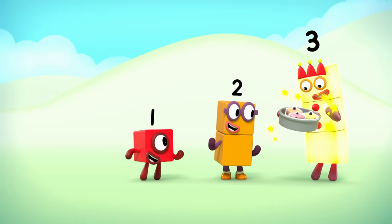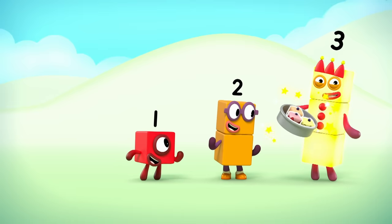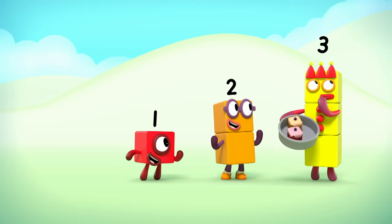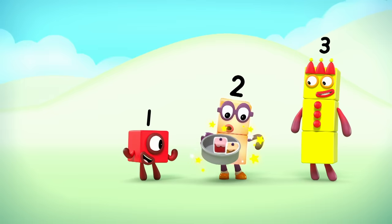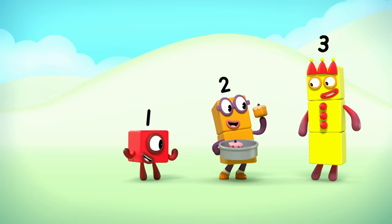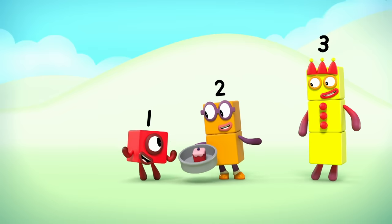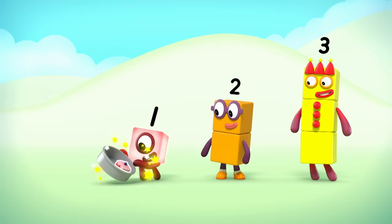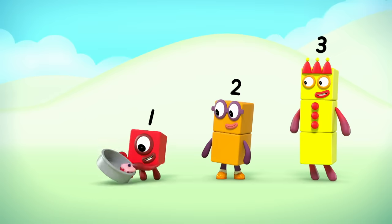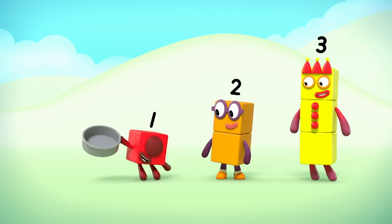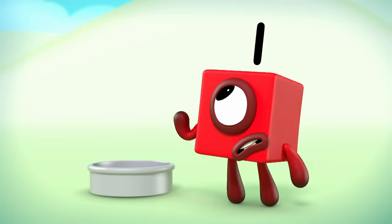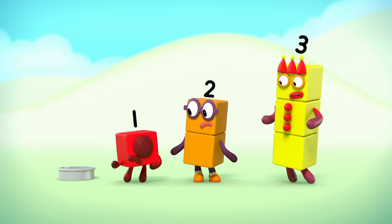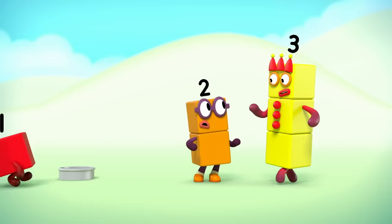One, two, three. Three block cakes. One for me. Nom, nom, nom. And one less than three is one, two. Two block cakes. One for me. Nom, nom. And one less than two is one. One block cake. One for me. Nom. And one less than one is... is... What's one less than one? Only one way to find out.